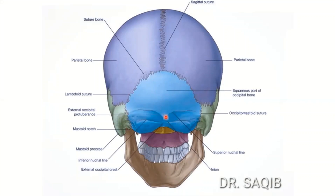There are two to three nuchal lines. The superior nuchal line is a constant feature, and below it is the inferior nuchal line. Sometimes the highest nuchal line is also present, though it is occasionally absent. Running from the external occipital protuberance down toward the foramen magnum — the opening in the base of the occipital bone — is the external occipital crest.